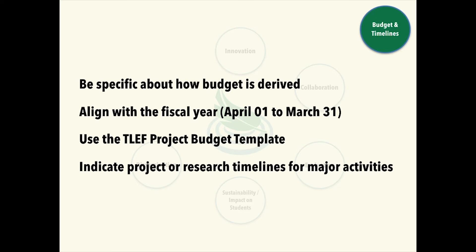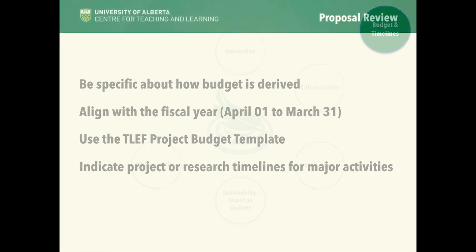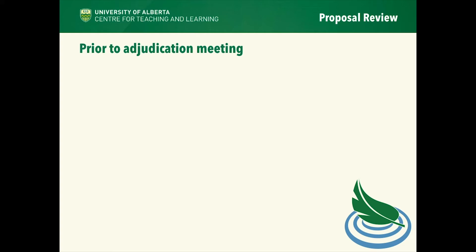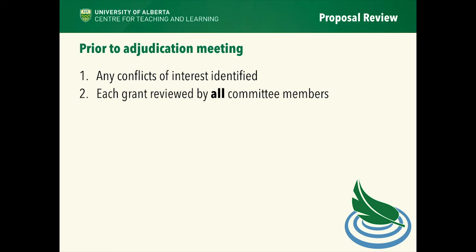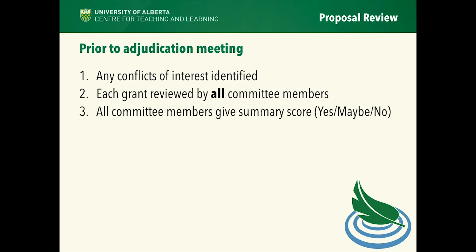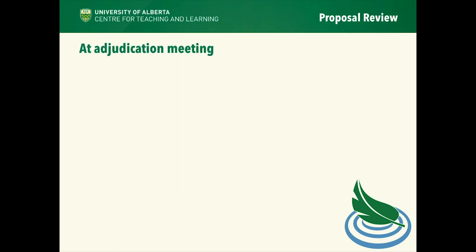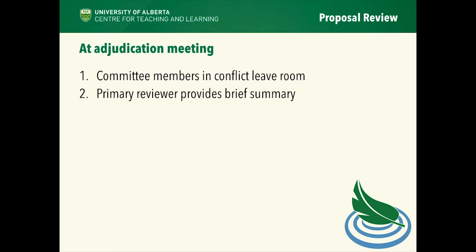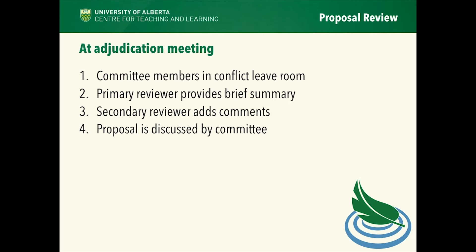If you're dying to know more about the adjudication process, you can listen on for just two more minutes. Prior to our adjudication meeting, any conflicts of interest are identified and each grant is reviewed by all the committee members. Before we meet, we each independently give a summary score and an overall comment of yes, maybe, or no in advance of the meeting. At the meeting, any committee members with conflicts of interest leave the room. The primary reviewer gives an overall summary of their thoughts, the secondary reviewer adds some comments, and then the proposal is discussed by the committee in depth, with all decisions made by consensus.